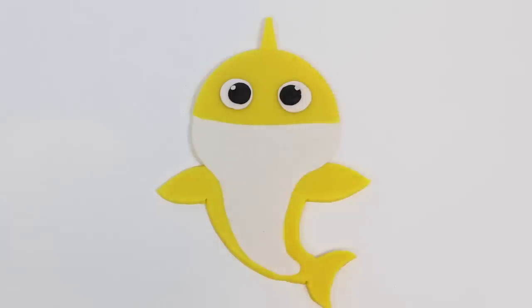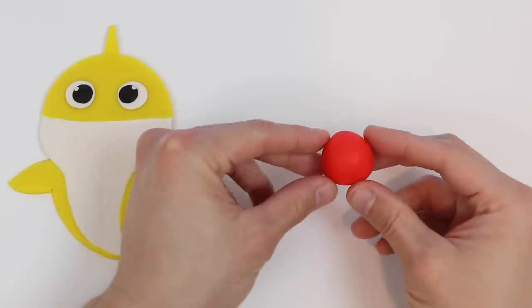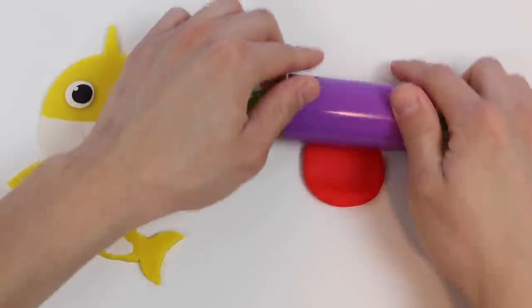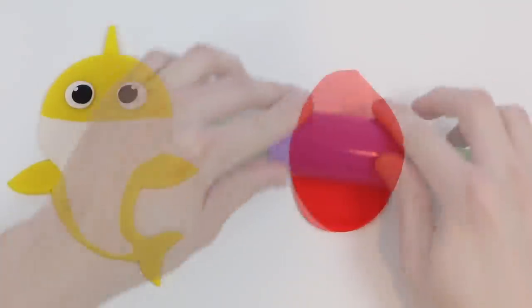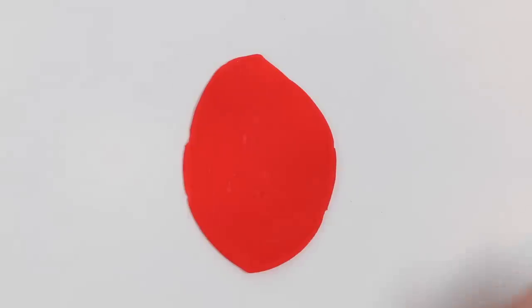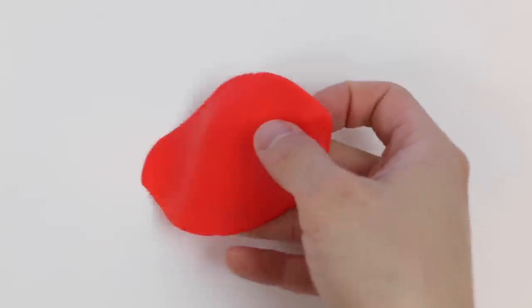Our baby shark already looks super cute. Now let's use red Play-Doh to make the mouth. Roll this out. All right, now let's make a mouth shape. Give me a second.